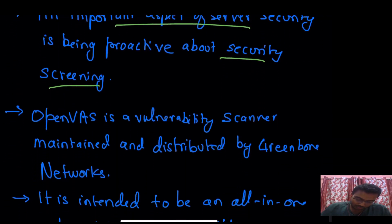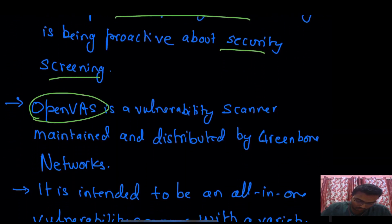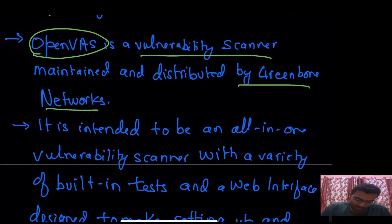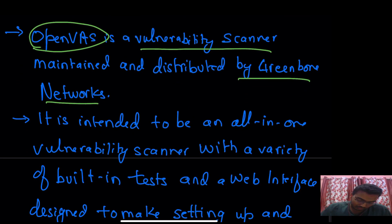And therefore, comes in the role of OpenVAS, which is basically a vulnerability scanner maintained and distributed by Greenbone Networks. Now, what is this? What differentiates OpenVAS from other vulnerability scanners?